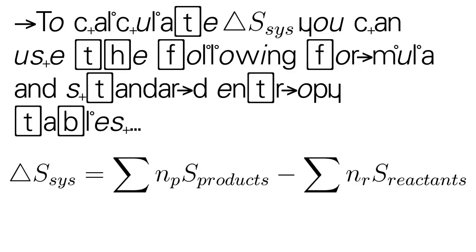To calculate the entropy of the system, we can use the following formula and standard entropy tables. The entropy change of the system equals the sum of the entropy of the products minus the sum of the entropy of the reactants in molar quantities.